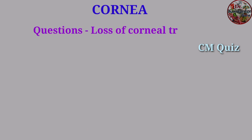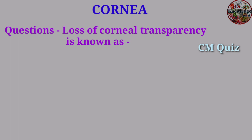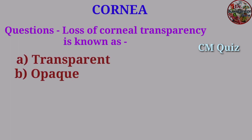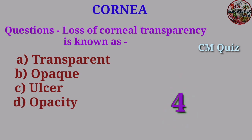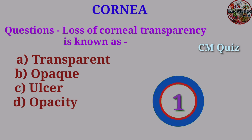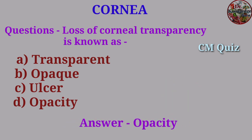Question: Loss of corneal transparency is known as — A. Transparent, B. Opaque, C. Ulcer, D. Opacity. Answer: Opacity.